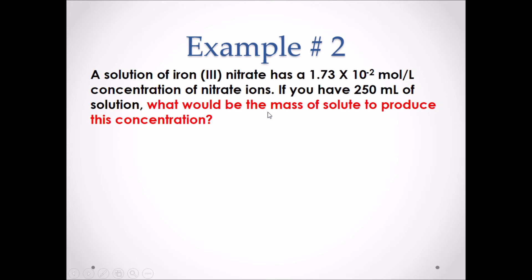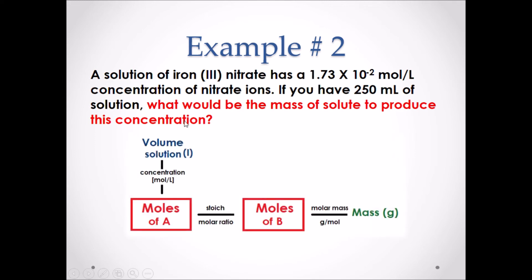The question is asking for the mass of the solute — the mass of the substance being put into water, which would be iron-3 nitrate. Looking at the Chemistry 20 calculations chart to understand this process: we are given the concentration of nitrate ions. We start with the volume of the solution, 250 milliliters, and use the concentration value provided to find the moles of nitrate ions. Once we have the moles of nitrate ions, we use the molar ratio in the chemical equation to find the moles of iron-3 nitrate, then use the molar mass to find the mass in grams.